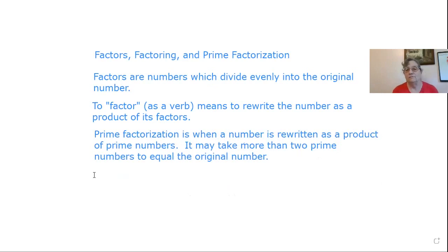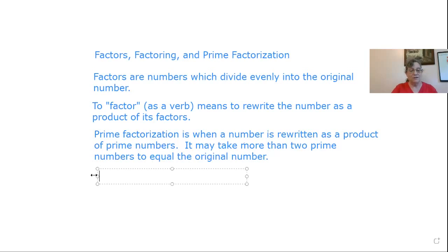Prime factorization is when a number is rewritten as a product where all of the factors listed in this problem are prime numbers. Prime numbers are numbers that will not divide by anything but themselves or 1. Because of this restriction, it may take more than two numbers to give us the original number. For instance, the number 12 could be rewritten as 3 times 4. However, 4 is not a prime number because it can be further broken down.